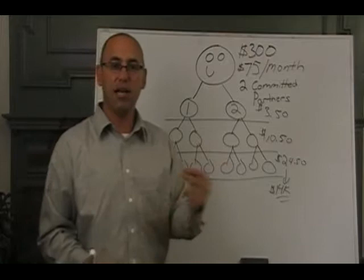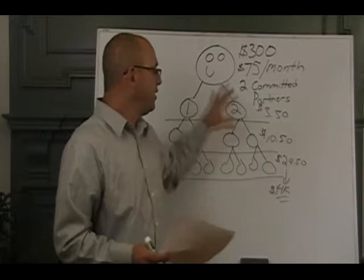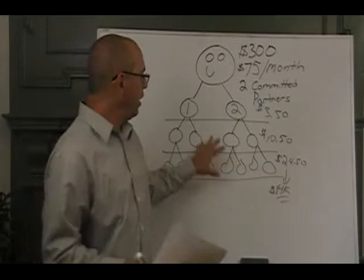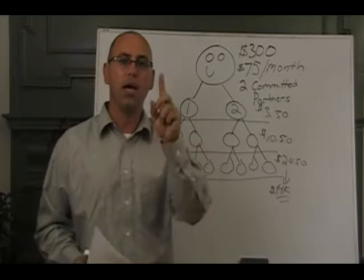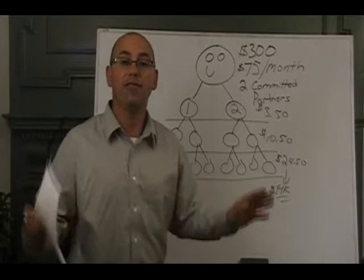When you have all that and you put a simple business plan like this that someone can write on a napkin and understand 2 to get 2 to get 2. Typically, people look at this and say, what's the catch? Well, there is no catch. This is only one residual income stream of 10 income streams. If you follow this process, all the other income streams unlock automatically.